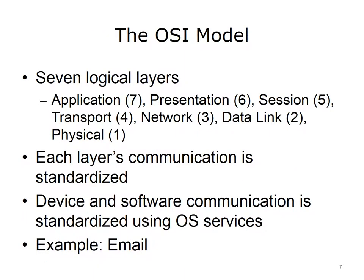The OSI model is composed of seven logical layers. The top layer, layer 7, is the application, followed by the layers: presentation, session, transport, network, data link, and physical. The physical layer is always layer 1 and the application layer is always layer 7.